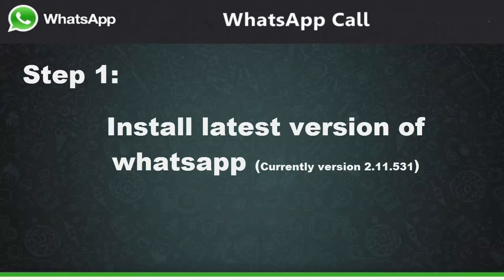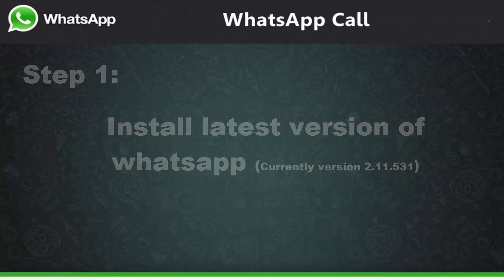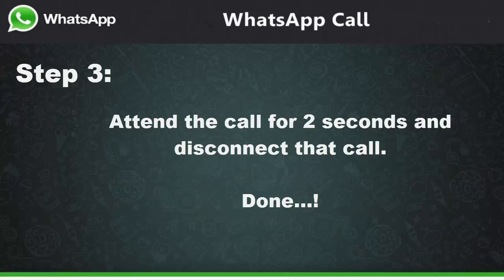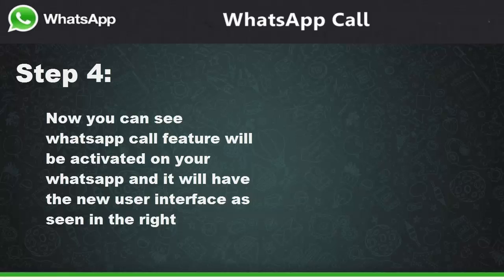You can get the latest version from apkmirror.com. For step two, you have to receive the invitation call from your friend — ask your friend to make an invitation call. You have to attend the invitation call for just a few seconds as you like, and then disconnect the call.